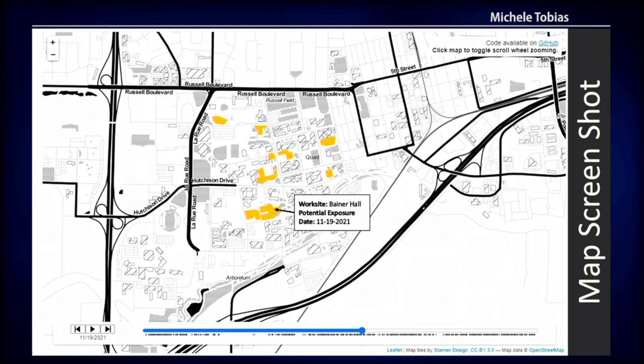I think this is a really nice way to visualize this data set. For me, as a geographer, it's a lot more intuitive than looking at building names. One reason we built this in the first place was I was looking at the tabular list and thought it looked like there was a cluster of exposures at the vet school — but it turned out I just recognized those building names and not the others. There wasn't actually a cluster there. This helps us really understand whether we're having a problem on a particular part of campus.